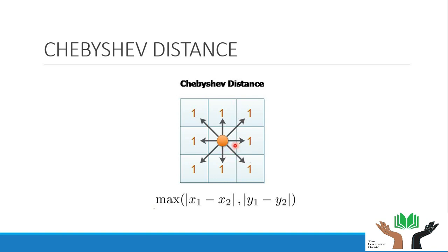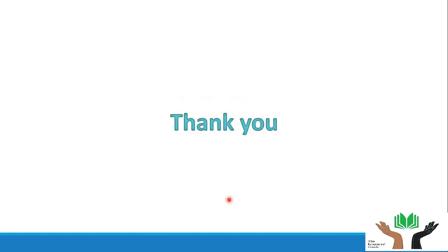In Manhattan distance, only straight moves are possible, not diagonal moves. In Chebyshev distance, diagonal moves are also possible, so the Chebyshev distance is the maximum value among the absolute differences between the given features of the vectors. If you have any doubts or questions regarding this topic, please leave them in the comment section. Thank you.